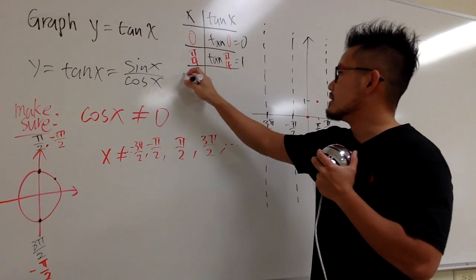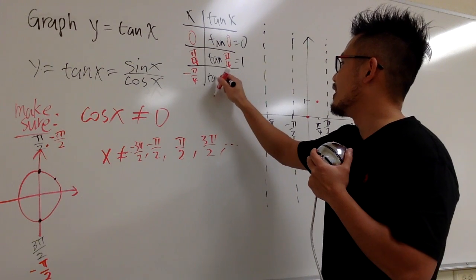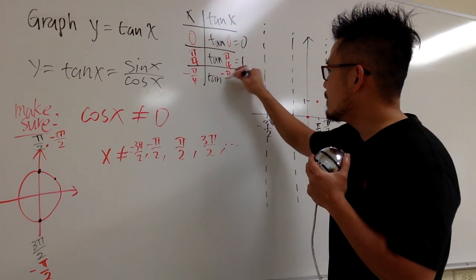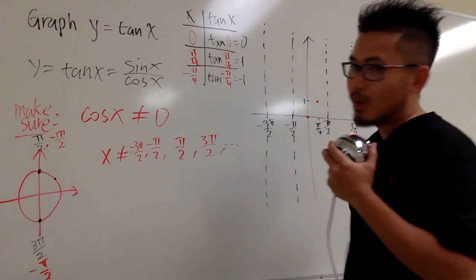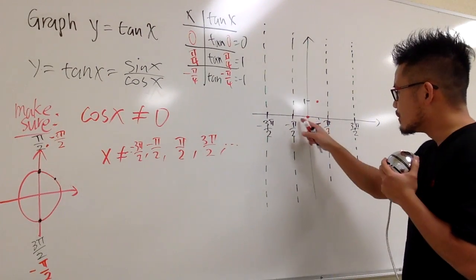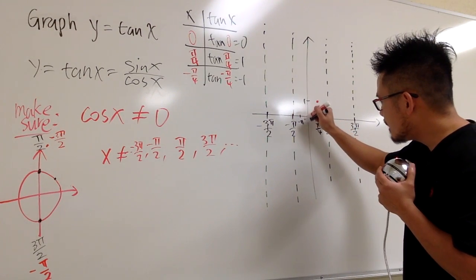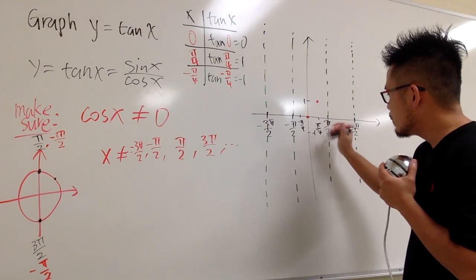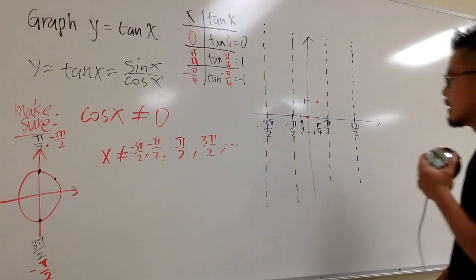And if x is -π/4, we get tangent of -π/4, and we will end up with -1. So, just move here, this is now -π/4, and then we have down here, -1, and you have a point right here.